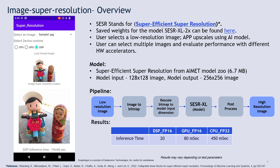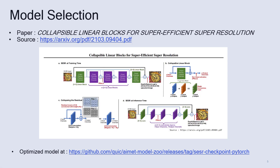Performance metrics on the latest Snapdragon hardware are shown in the table. We can clearly see the performance improvement on DSP with respect to CPU. This slide gives an overview of the model architecture, and the reference to the original paper is mentioned to explore further.